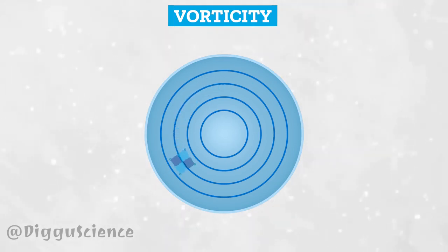Mathematically, vorticity can be calculated through the equation zeta equals curl of the velocity field. This is nothing but two times the rotation rate.